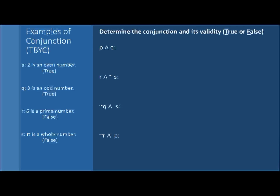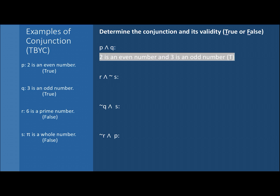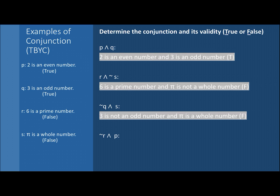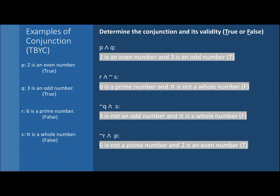Pause the video and try the four conjunction examples, then restart to check. For the first: 'Two is an even number and three is an odd number' — true and true, a true statement. For the second: 'Six is a prime number and pi is not a whole number' — false and true, a false statement. For the third: 'Three is not an odd number and pi is a whole number' — false and false, a false statement. For the fourth: 'Six is not a prime number and two is an even number' — true and true, a true statement.